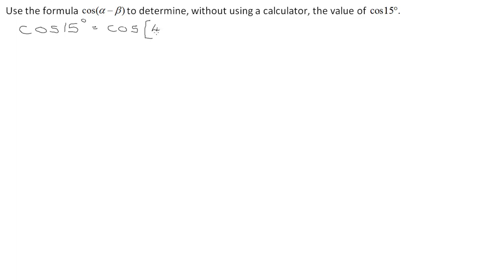We'll use special angles: cos 15° = cos(45° − 30°). If you subtract 45 minus 30, that gives you 15. As a result, we need to draw the triangles for 45° and for 30°.